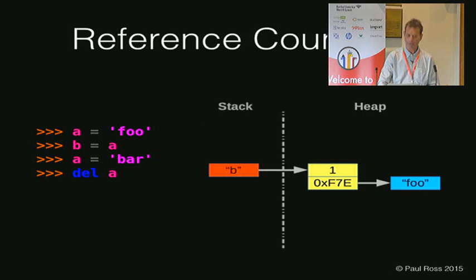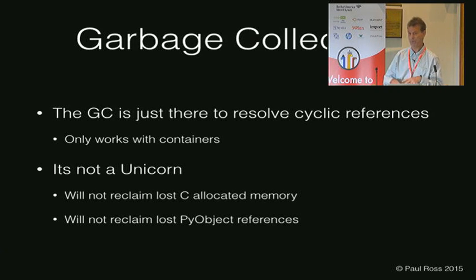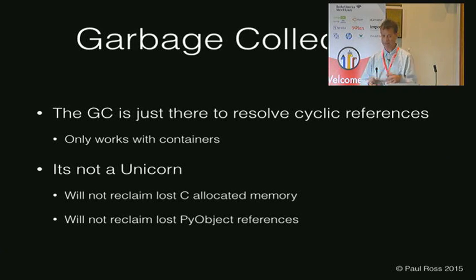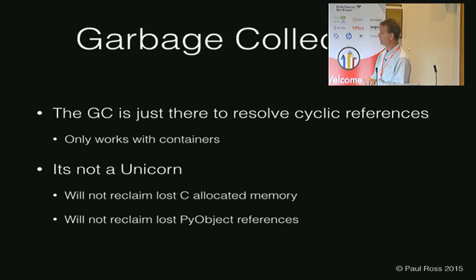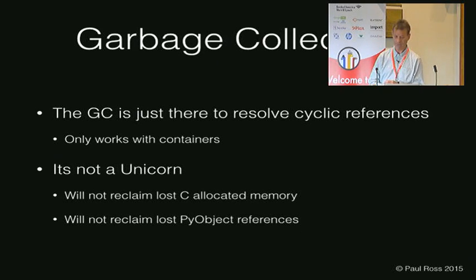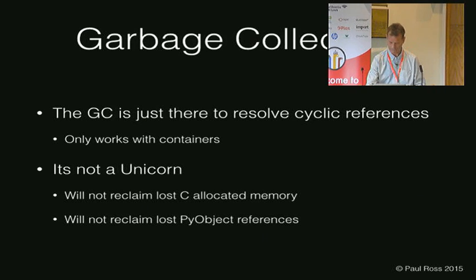There is a garbage collector in Python. It's really just there to resolve cyclic references, and it only works with collections, so it's not of interest to us in this talk. It's not a unicorn, it's not something magic — it's not going to save your sorry arse if you lose C-allocated memory or if you lose Python object references in your C code. A garbage collector is no use for that. You're obliged to follow the rules of how CPython does it.